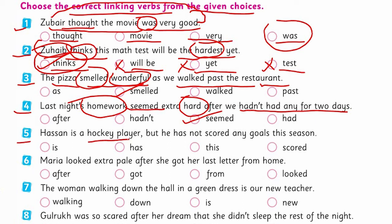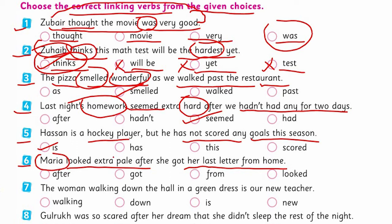The fifth one: 'Hassan is a hockey player but he hasn't scored any goal this season.' We have the linking verb clearly here — it is 'is,' the right option. The sixth one: 'Maria looked extra pale when she got her last letter from home.' Maria is the noun, 'pale' is the adjective. The word connecting them is 'looked' — look is the linking verb here.